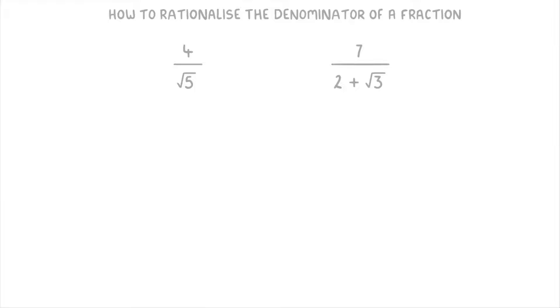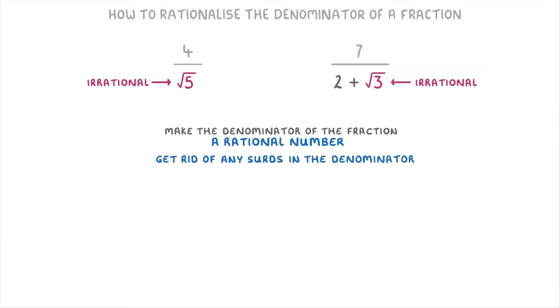Now rationalizing the denominator is kind of a weird phrase, but basically all it means is that you have to make the denominator of the fraction a rational number. And the key thing to remember is that surds aren't rational. Instead they're considered irrational numbers. So in questions like this they're really just asking you to get rid of any surds that are in your denominator.